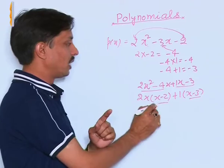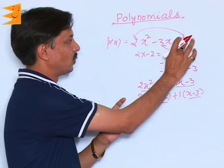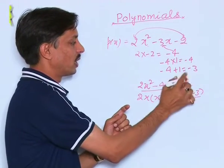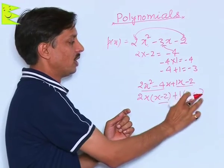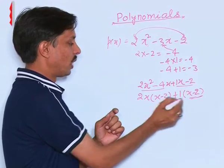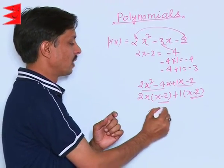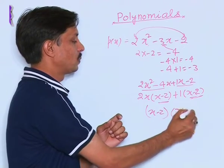If I take here, sorry, this value is basically -2. So I need to write here -2. This is also -2. So x - 2 is the same, and then left is 2x + 1.